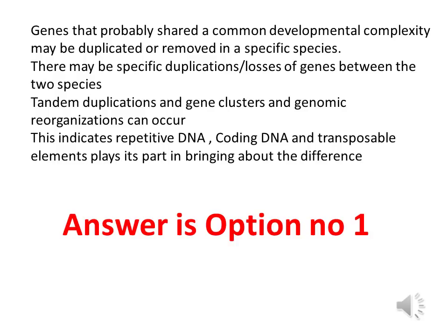Genes that probably share common developmental complexity may be duplicated or removed in a specific species. Between different species, some genes can be duplicated or removed. Tandem duplication, gene clusters, and genomic reorganization can occur. This indicates that repetitive DNA, coding DNA, and transposable elements can play an important role in bringing about the difference between two organisms' DNA content. So the answer is option number one: transposable elements, coding DNA, as well as repetitive DNA.